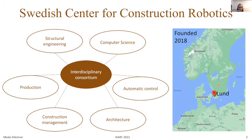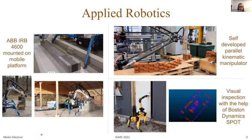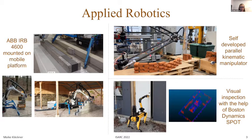We are focusing on three different robotic solutions for use in construction robotics right now. We use a software solution including off-the-shelf components — an industrial arm robot mounted on a mobile platform — used for tasks like exact block handling, gluing, or sewing. We have the self-developed parallel kinematics manipulator, used so far in lab experiments and very suitable for pre-fabrication processes. And we also have a commercial robot dog used for visual inspection on the construction site.